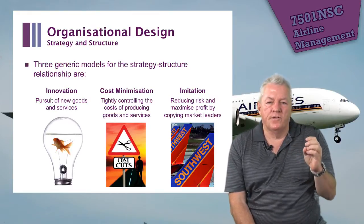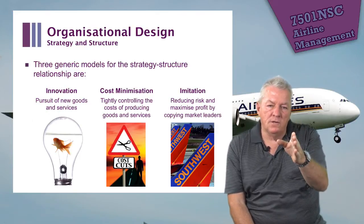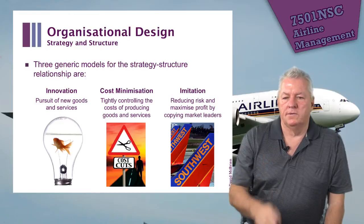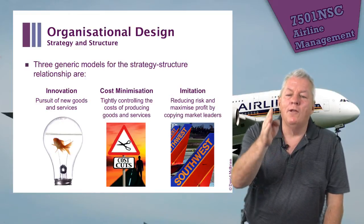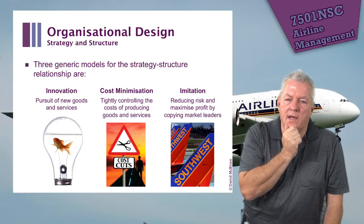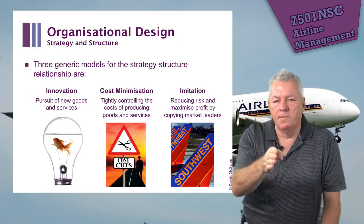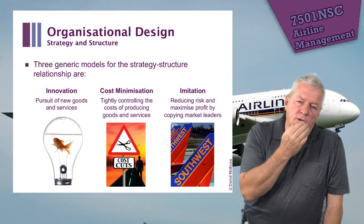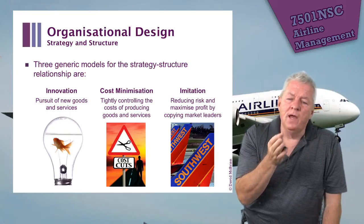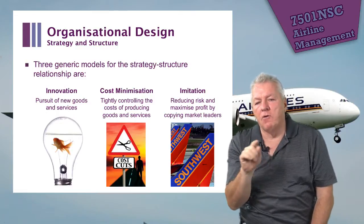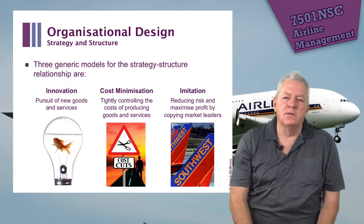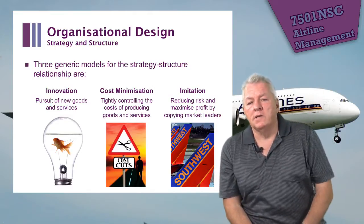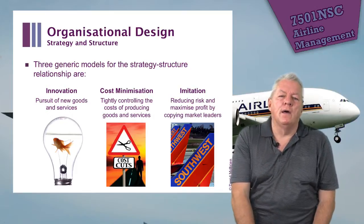There are three generic models for the strategy-structure relationship: innovation — pursuit of new goods and services — cost minimization, and imitation. Southwest Airlines, the first low cost carrier in the world, was widely imitated. Many airlines follow a cost minimization model, trying to be the lowest cost producer in the market. AirAsia is a good example of a mix: it imitated Southwest Airlines' low cost carrier model while using cost minimization as its basis, providing airline seats at the lowest price in the world.